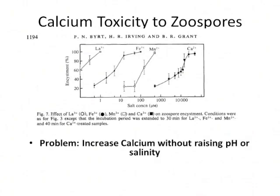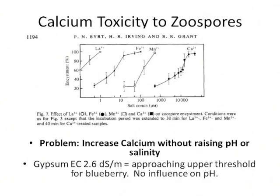The problem is we need to find a source of calcium without raising the pH and without increasing salinity to a level too high for blueberries. Gypsum — calcium sulfate — does not raise the pH, because sulfate is the conjugate base of a strong acid and doesn't change pH when put in soil. It can, however, have slightly elevated electrical conductivity — about 2.6 decisiemens per meter if you saturate the soil with gypsum — which approaches the upper limit for blueberry growth.